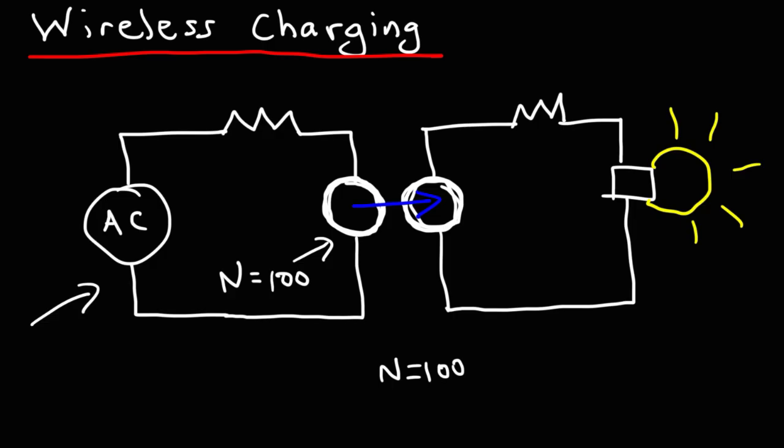The charger, which would be the device represented on the left side, has a coil of wire. The phone that can be charged wirelessly will also have a coil of wire. As you bring the phone close to the charger, energy will be transferred from the charger to the phone.